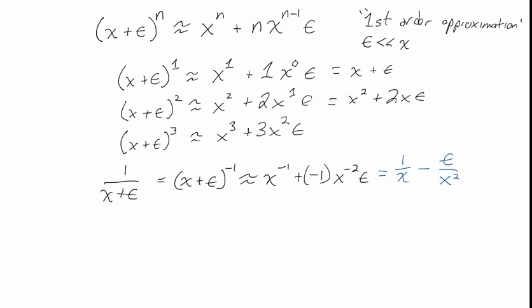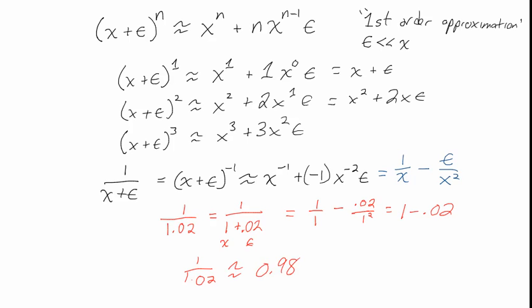Let's see a numerical example. To compute 1 over 1.02, write it as 1 over (1 plus 0.02). Applying the formula with x equals 1 and epsilon equals 0.02, this approximates as 1 over 1 minus 0.02 over 1 squared, which equals 1 minus 0.02, or 0.98. So 1 over 102% is approximately equal to 98%.